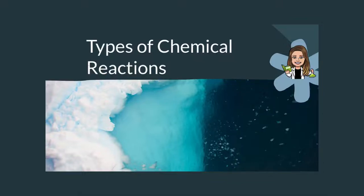Hi, and welcome back to my channel, Learning Biology with Dr. Vanessa. In today's video, we're going to take a look at the different types of chemical reactions that happen in the body. We'll start with an explanation of metabolism and the difference between anabolism and catabolism. I'll follow that with how chemical reactions fall into those categories and the different types of chemical reactions that we find throughout the body.